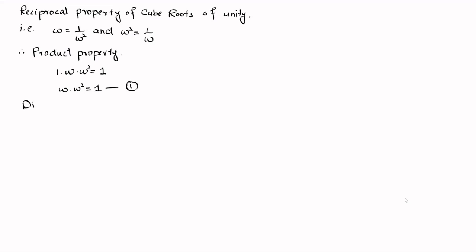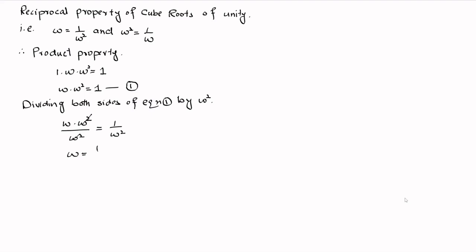We will divide both sides of equation number 1 by omega square. Omega multiplied with omega square divided by omega square is equal to 1 over omega square. Omega square cancels out with omega square, so we have omega is equal to 1 over omega square — meaning omega is the reciprocal of omega square.